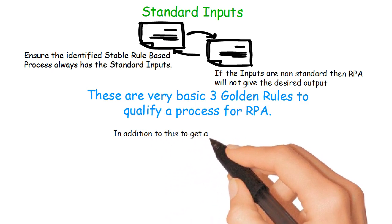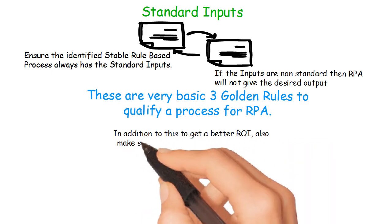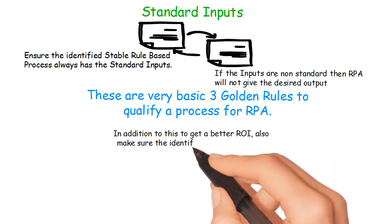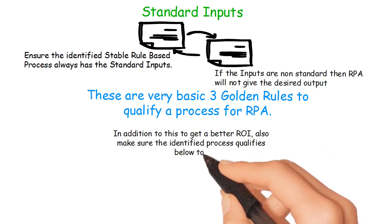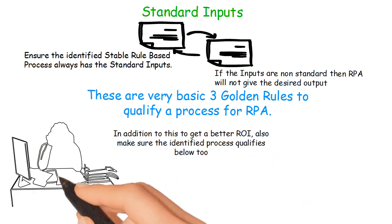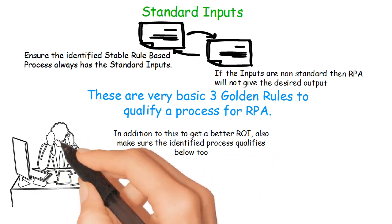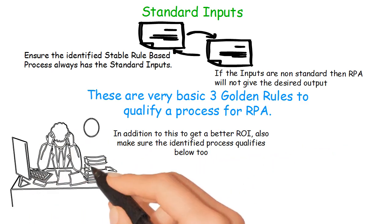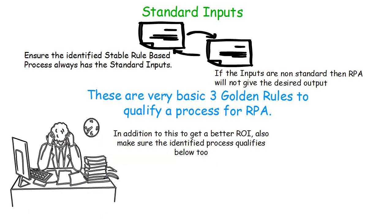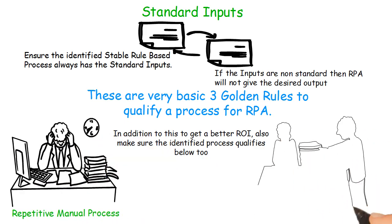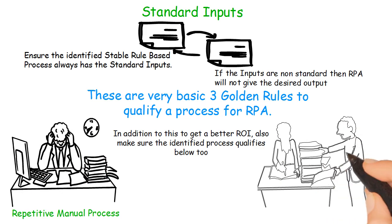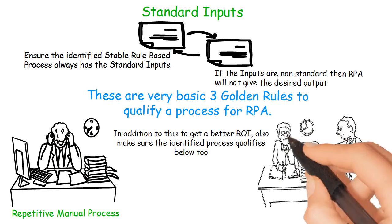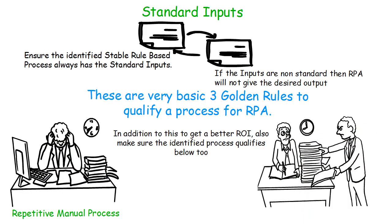In addition, to get a better ROI, make sure the identified process also qualifies on these two points. It's ideal to select a repetitive manual process for FTE benefit, and the process should also quantify in terms of high volume to gain a better return on investment.